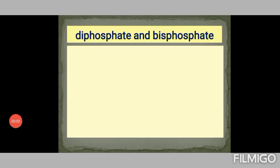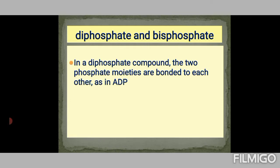First, we can see the difference between diphosphate and bisphosphate. Diphosphate is a compound in which there are two phosphate groups, but they are bonded to each other — bonded back to back — as happens in ADP, adenosine diphosphate.